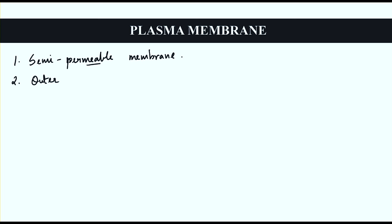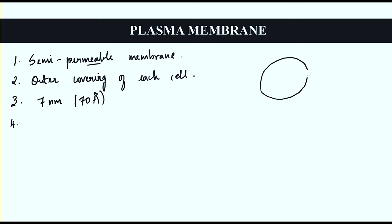The plasma membrane is the outer covering of each cell and its size is about 7 nm, or 70 Angstroms. When drawn, we represent it as a single line, but actually it is a bilayer — there are two layers in this membrane. We are going to see the structure of the plasma membrane in the next slide.